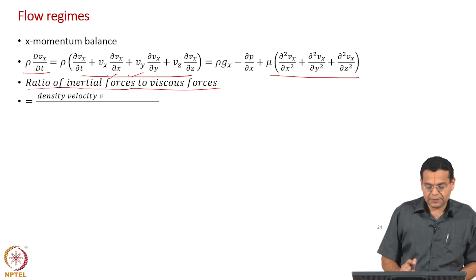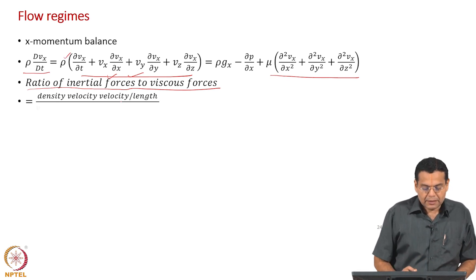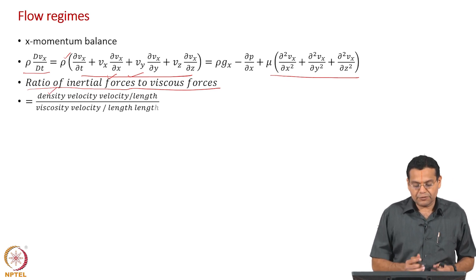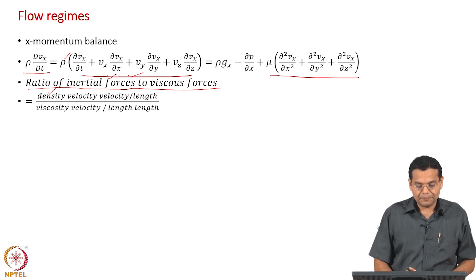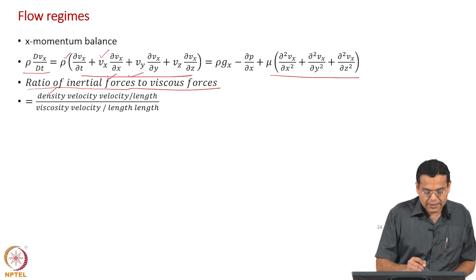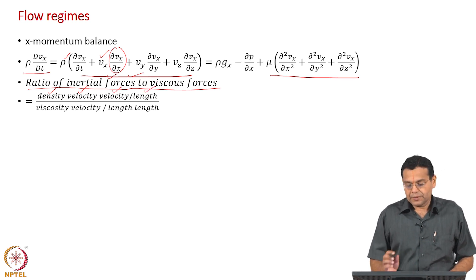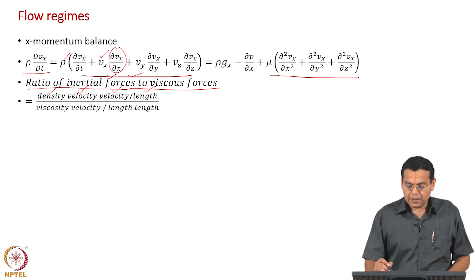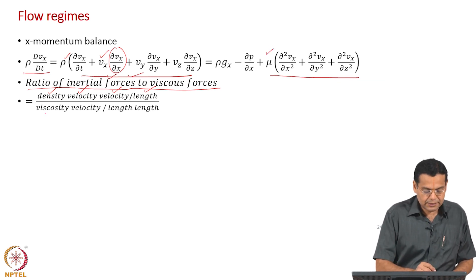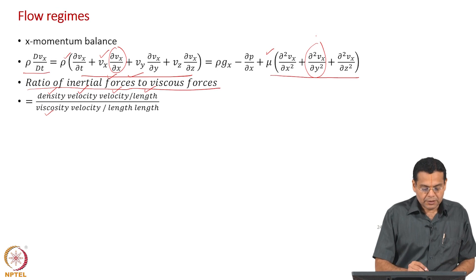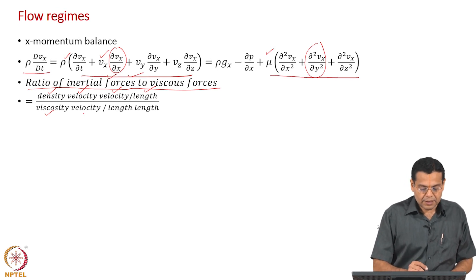For the inertial force, we have density, velocity, and the gradient of velocity, which is expressed as velocity per length. Coming to the viscous forces on the right-hand side, we have viscosity and then the second derivative of velocity — a Laplacian — which is expressed as velocity divided by length squared.